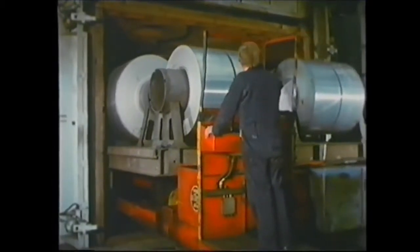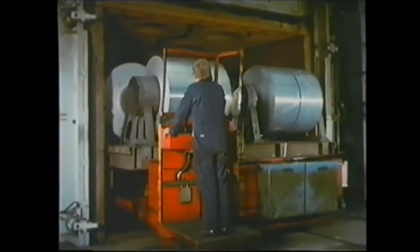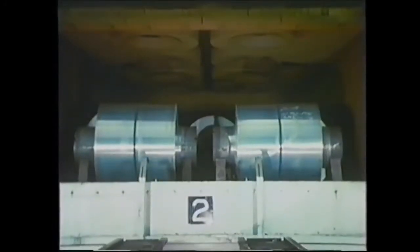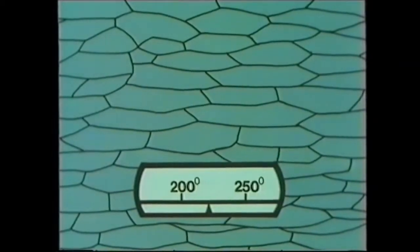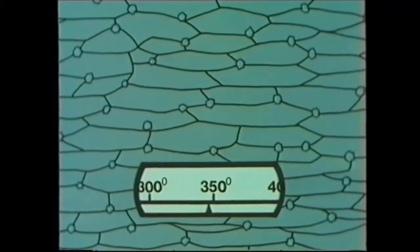After cold-working a metal, it's usually heated to a sufficiently high temperature. Let's see what effect heating has on the distorted grain structure. In the case of this particular metal, nothing happens until the temperature reaches about 350 degrees centigrade.